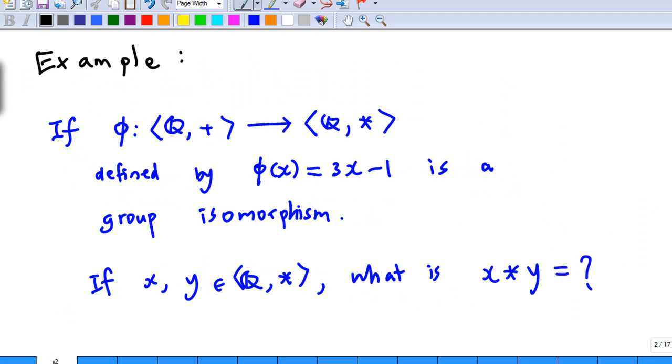Here is an example. If phi from the set of rational numbers Q under addition to the set of rational numbers Q under binary operation star, defined by phi of x equal to 3x minus 1 is a group isomorphism, and if x, y belong to Q star, what is x star y?